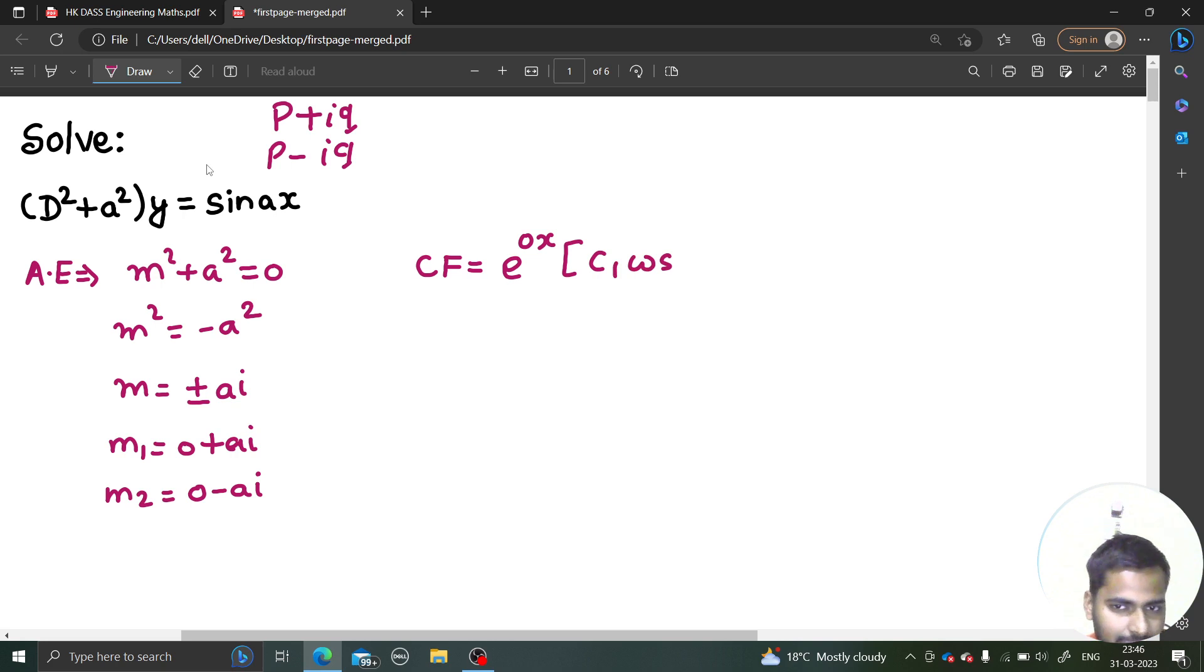So imaginary part in this case is a plus c2 sin ax. So complementary function is basically c1 cos ax plus c2 sin ax.